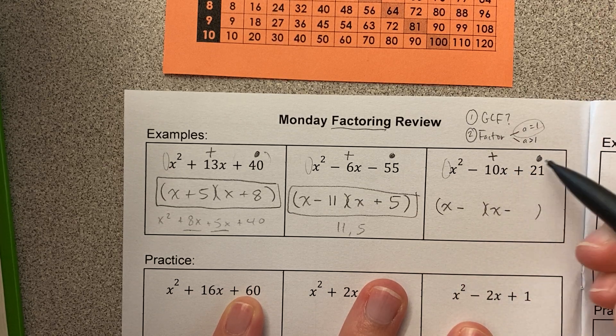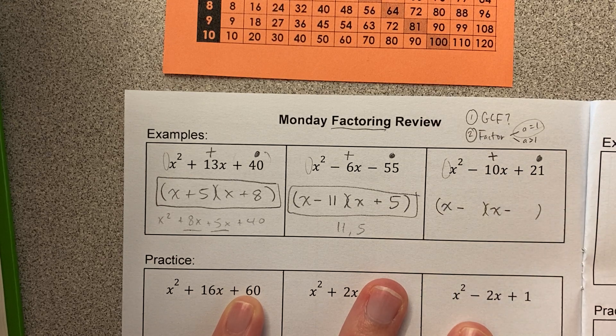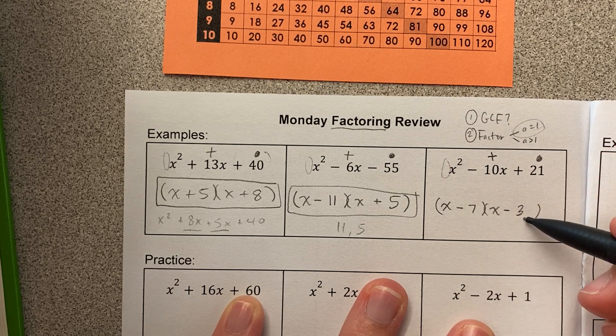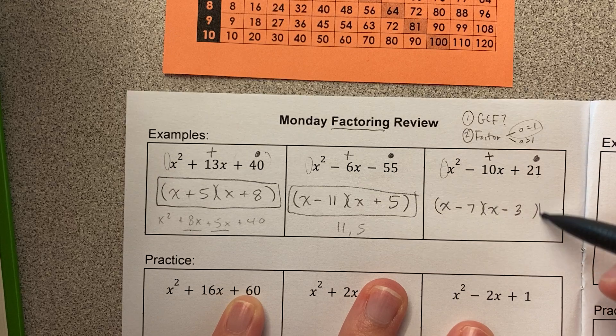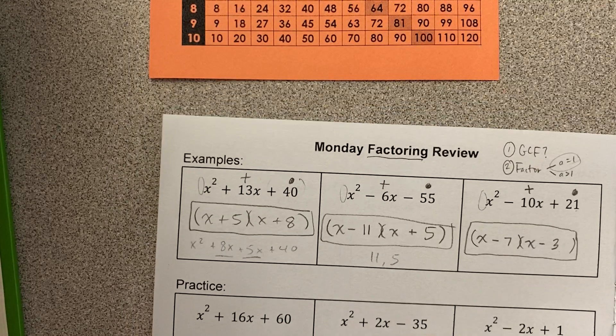So now I'm trying to think of two numbers that multiply to 21 and add to 10. Those two numbers are 7 and 3. Negative 7 times negative 3 is positive 21. Negative 7 plus negative 3 is negative 10. Okay, so you're gonna go ahead and try the rest of this page.